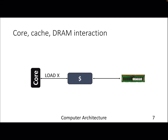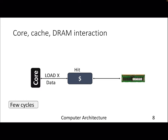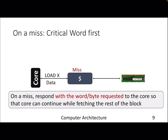The core interacts with memory through loads and stores. A load is reading something from memory; a store is writing something to memory. In a load, on a cache hit you get the data in a few cycles — pretty simple. But if you get a miss there are multiple optimizations you can perform, because the DRAM response is slow.